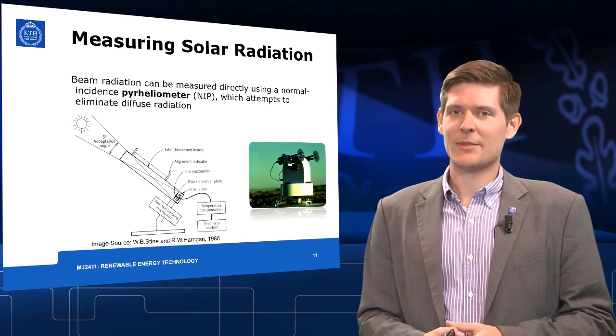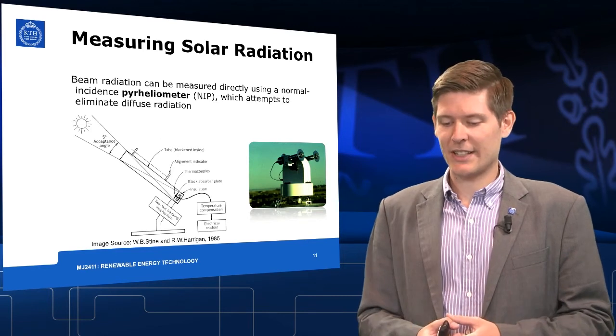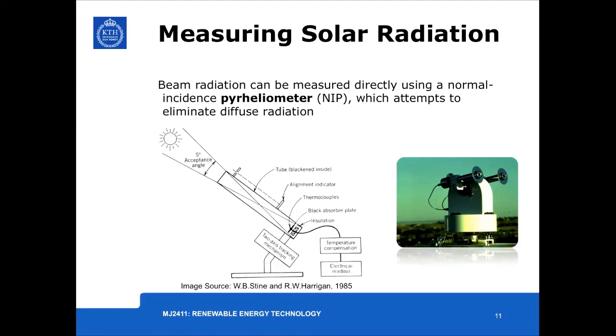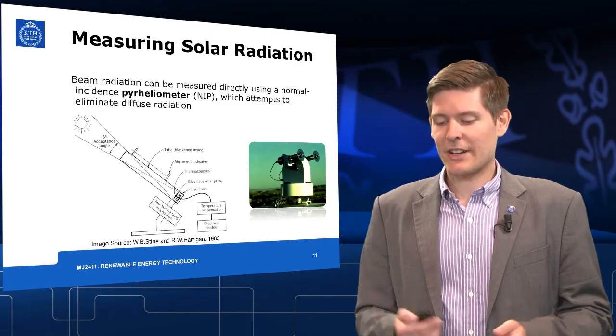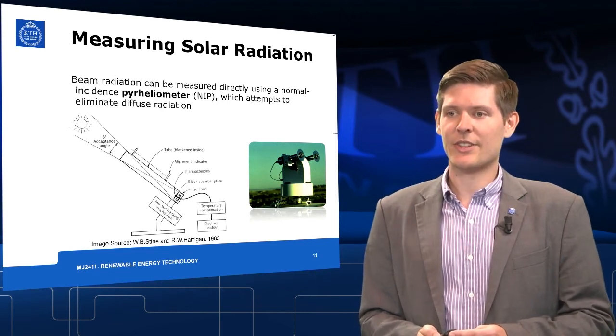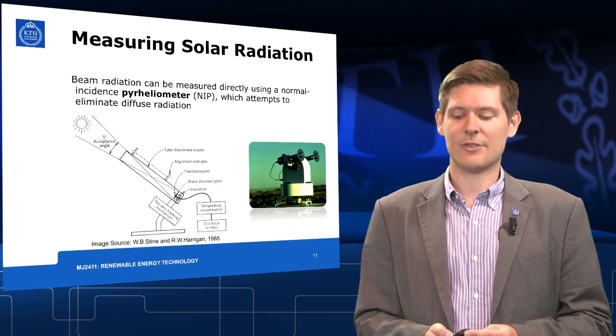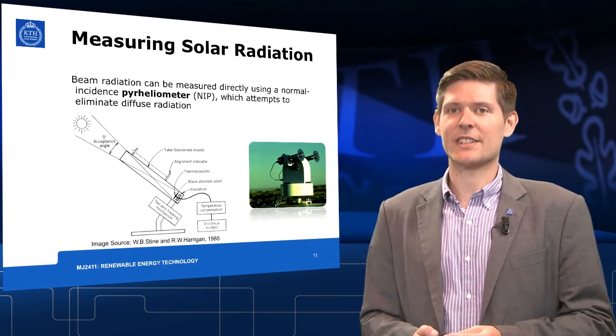Another measurement device which is directly able to measure the beam radiation is the normal incidence pyheliometer, or NIP. It uses a long tube, which needs to be aligned to be pointing at the sun, and it measures directly the beam radiation. To simplify the operation of the NIP, an acceptance angle and an acceptance current of about 5 degrees is used for the incidence radiation.